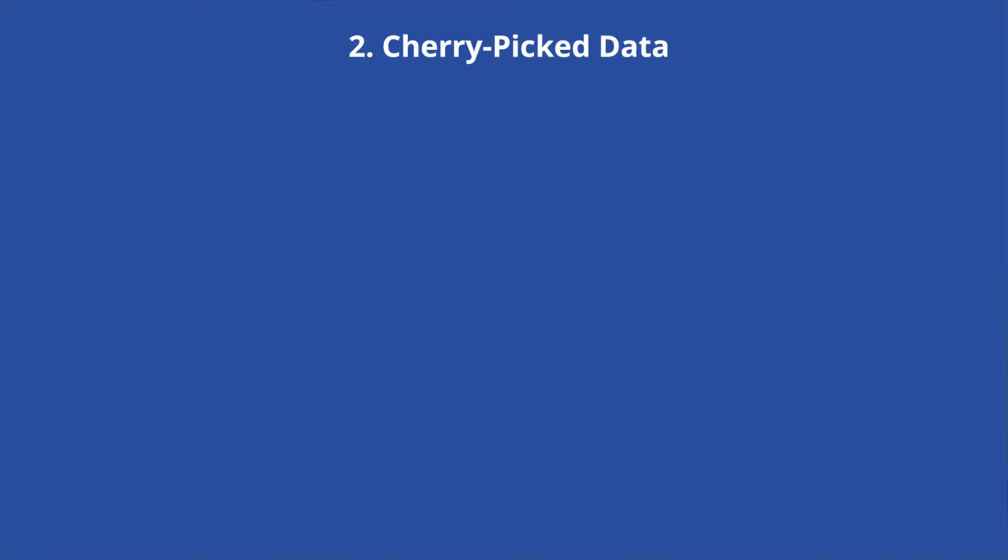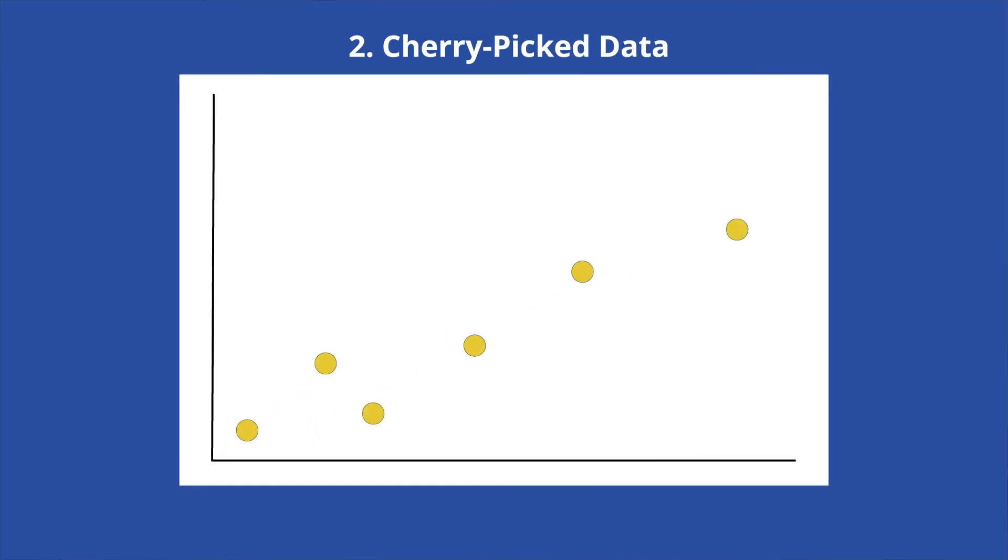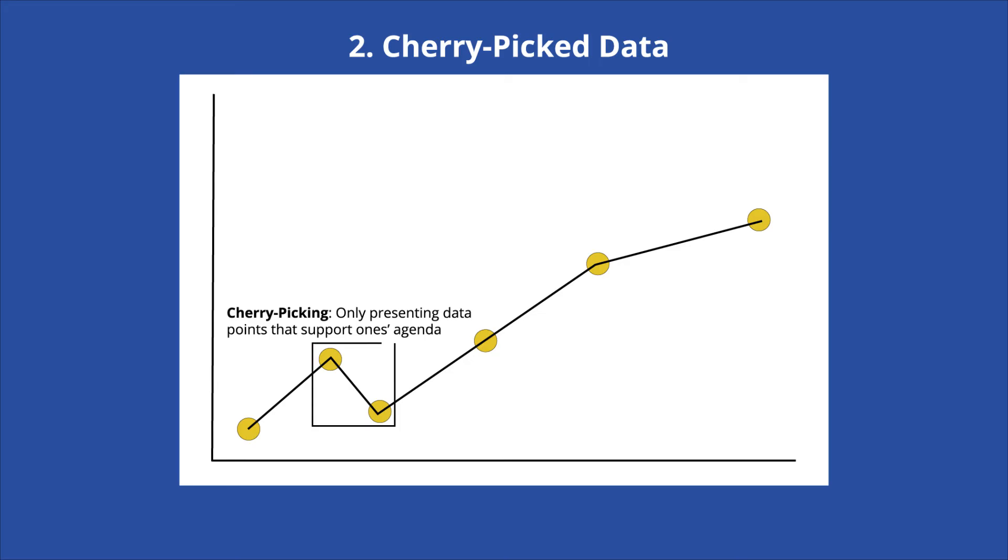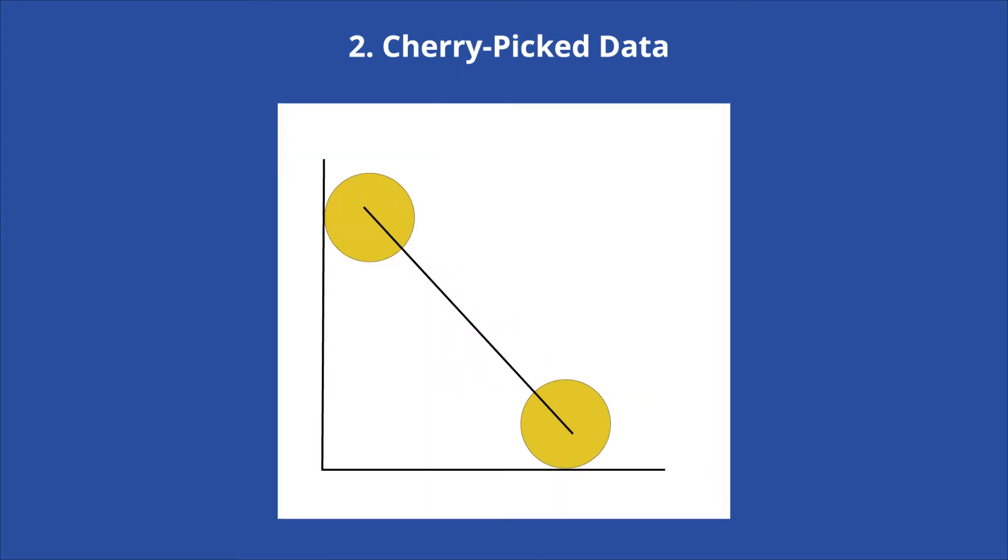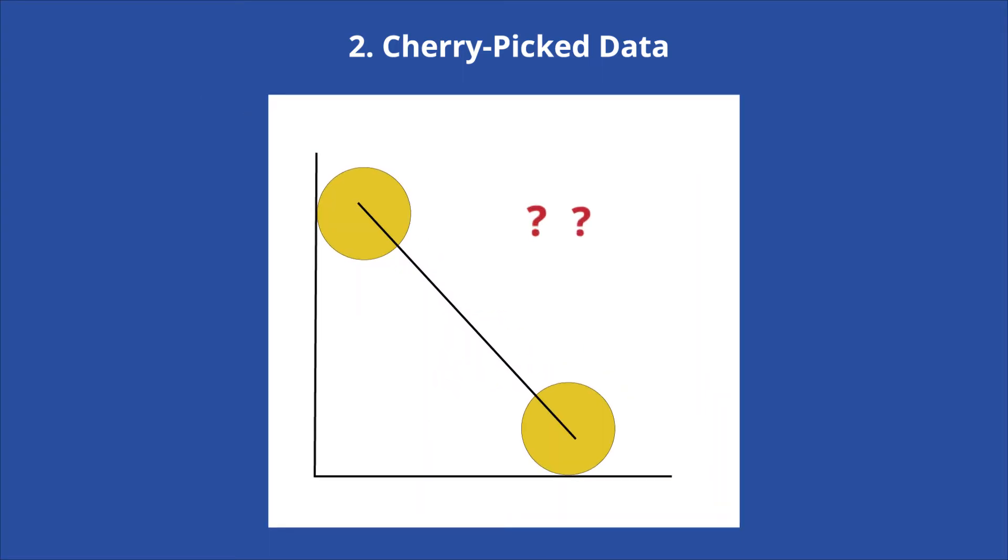Second, data has been cherry-picked. Because a graph consists of many data points, to understand what the data is really saying, you must look at the overall trend. However, people may choose to only present data points that support their agenda rather than show the whole picture. This biased selecting of data is called cherry-picking. By zooming in on a particular section of a graph, you can come to a different conclusion from the overall trend, one that is false.